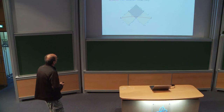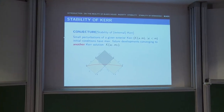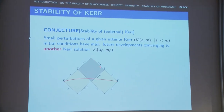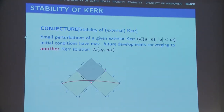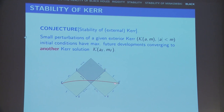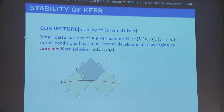The conjecture is this: if you look at the exterior of a Kerr solution — this is a horizon, this is scri, you have a space-like hypersurface — and if you look at the induced metric on the space-like hypersurface, the initial dataset corresponding to Kerr, and make a small perturbation, the conjecture is that you are going to converge to another Kerr solution. The final states are going to be different from the original states, and finding these final states is a huge mathematical difficulty.